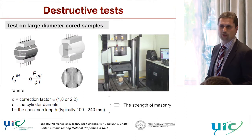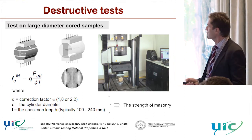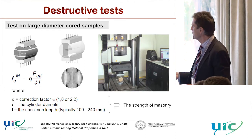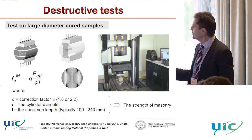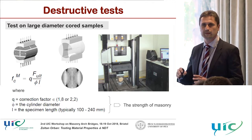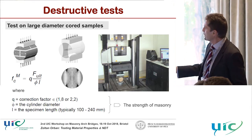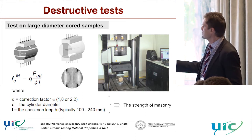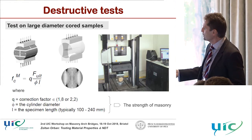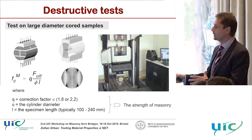Regarding destructive tests, there are many ways of testing mechanical properties of masonry. The UIC recommendation is considered the most accurate because the specimen contains not only the bricks but also the mortar, giving composite masonry strength. However, there are uncertainties — it's not quite clear how stress is distributed in the sample. The strength can be calculated with a correction factor between 0.8 and 2.2, which indicates the test's accuracy.